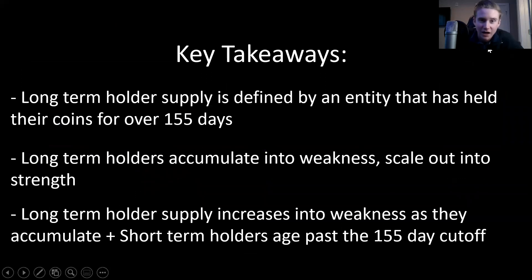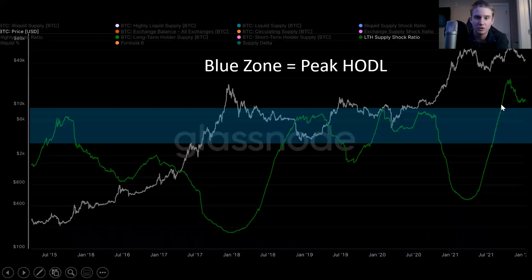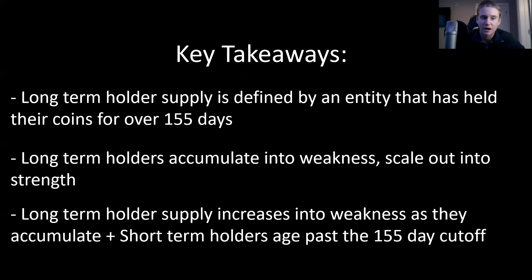With that in mind, let's look at some key takeaways to wrap this up. Long-term holder supply is defined as an entity that has held their coins for over 155 days. Long-term holders accumulate into weakness and scale out into strength. Long-term holder supply increases into weakness as they accumulate, plus as short-term holders age past the 155-day cutoff. And importantly, long-term holders set the floor at the bottom of the bear market — that's a very important concept through this metric. I really hope you guys enjoyed today's intro video. Let me know what you thought and any other metrics you'd like to see covered — just drop a comment below. Please like and subscribe, and I'll see you guys in the next one. Take it easy.